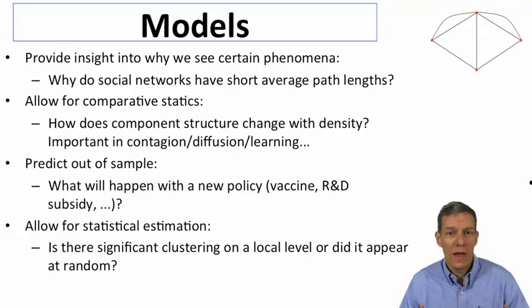Models also allow for comparative statics. If we understand that models change as we change different parameters, that can help us make predictions about how the world might change. How does the component structure change with density? If a network has more and more links, what does that do to the overall component structure of a network? It'll help us make predictions out of samples. If you want to come in with a new policy, for instance, you're trying to stamp out a flu epidemic—how effective does a vaccine have to be in order to limit the extent of an epidemic? That's a question that we can begin to answer with network analysis.